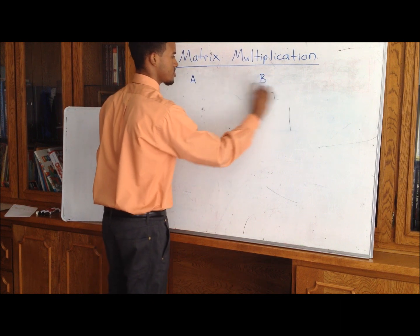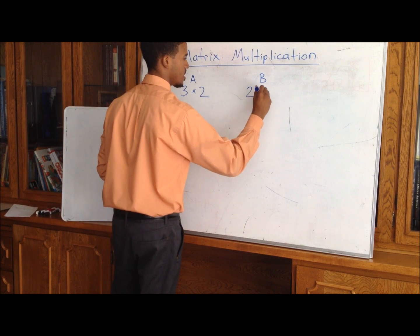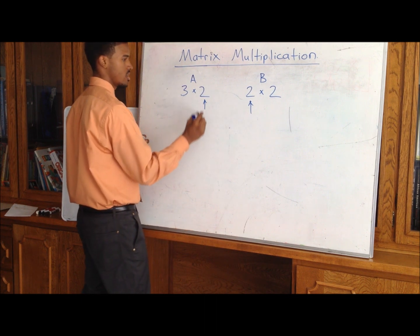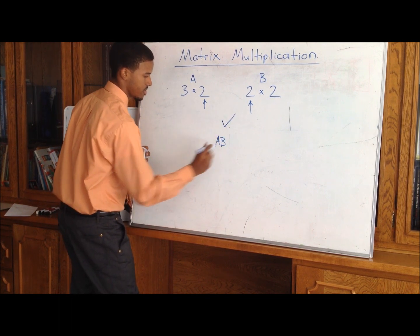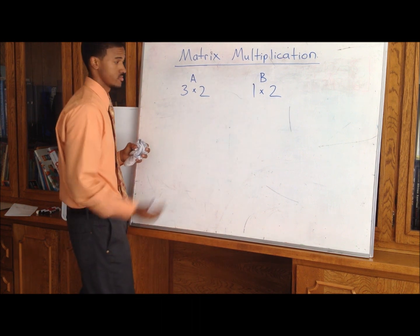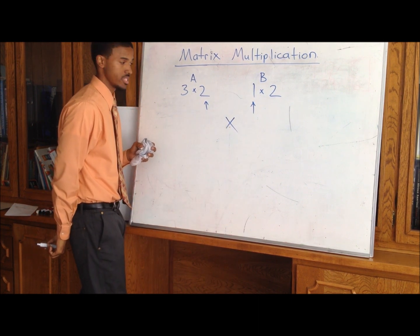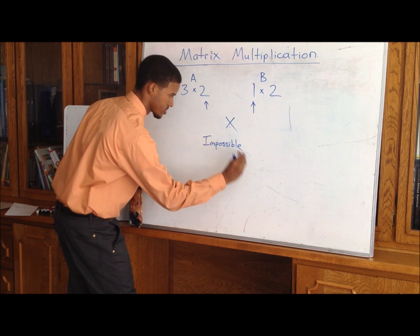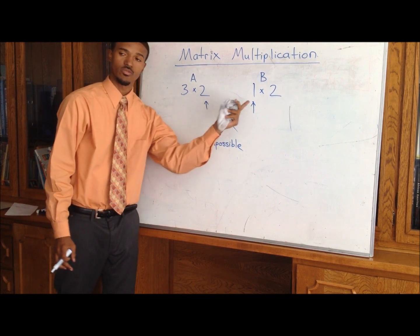Let's give examples. If matrix A is 3 by 2 and B is 2 by 2, we can multiply them because the columns of the first matrix — this 2 — matches the rows of the second matrix. So yes, we have a solution to A times B. But if we had a 3 by 2 and a 1 by 2, this 2 and this 1 are not the same — we cannot carry out the operation. In those cases, we label it impossible.